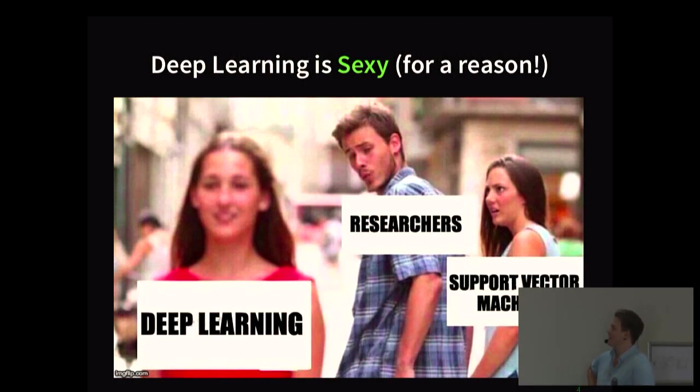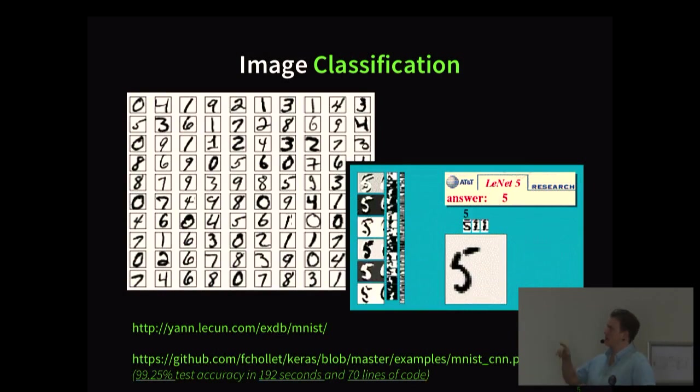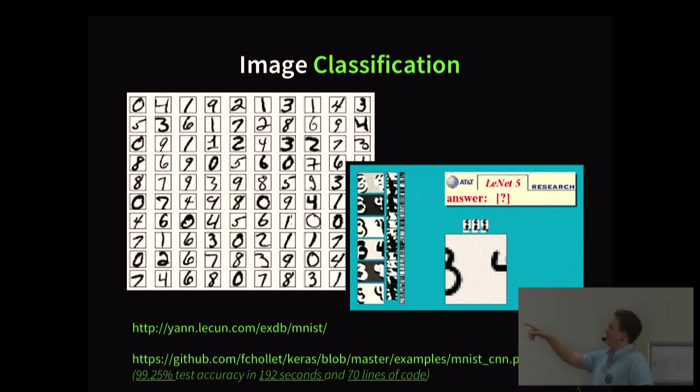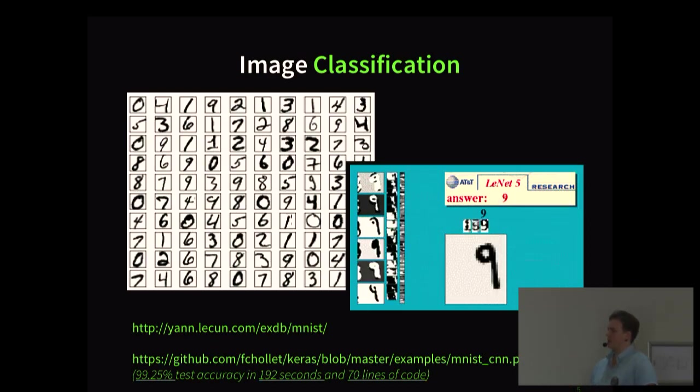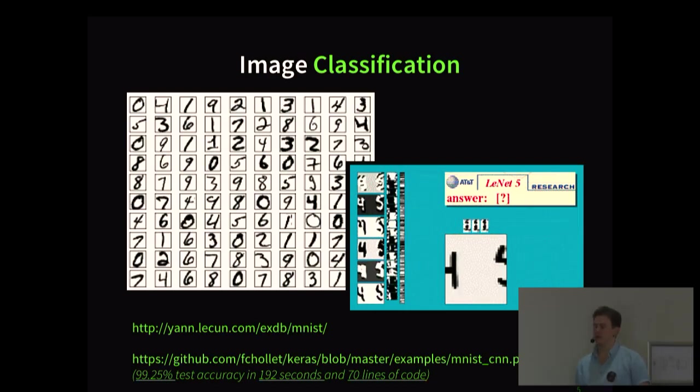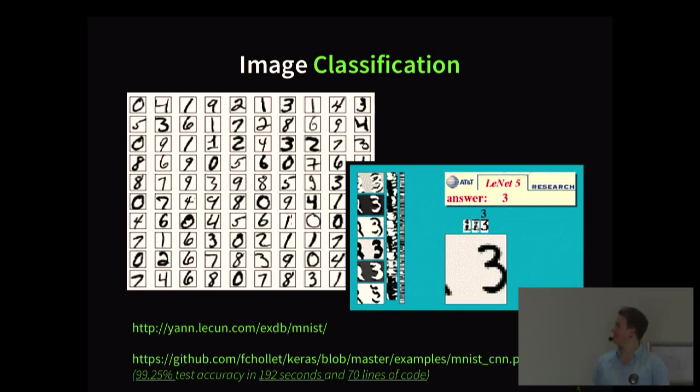Deep learning is very sexy these days. This is probably the only time you're going to see the word sexy in a presentation today. And it's sexy for a reason. The sort of hello world of computer vision problems is this MNIST dataset where you're trying to recognize handwritten digits. And the gif is Lenet. So, Yann LeCun, who's one of the forefathers of deep learning, did some work he did at AT&T to recognize postal codes on letters. Now, what's crazy is using the link at the bottom, there's a Python script, a Keras implementation of a convolutional network to solve this problem that gets 99.25% test accuracy in three minutes with 70 lines of code.